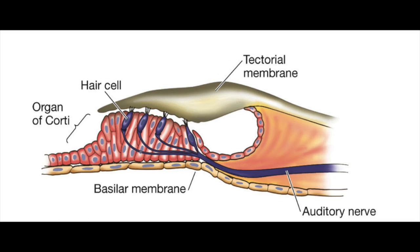The hair cells embedded in the organ of corti contain stereocilia, which are hair-like structures protruding from the cells. As the organ of corti moves up and down, the stereocilia collide with another membrane called the tectorial membrane. This causes the stereocilia to bend, and this mechanical energy produced by the bending opens ion channels on the stereocilia and depolarizes the hair cells, creating electrical signals and action potentials.